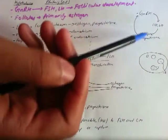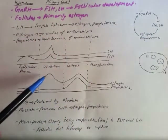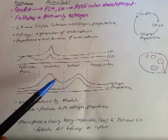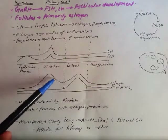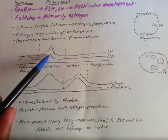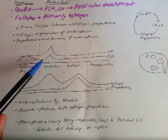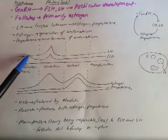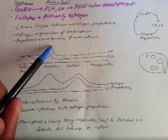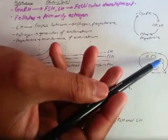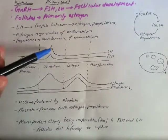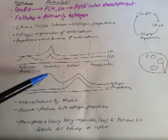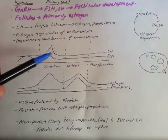We learned that estrogen causes negative feedback, but right at ovulation something different happens: the negative feedback is actually replaced by positive feedback. This large amount of estrogen causes a spike in LH and FSH — the opposite of what we'd expect. This spike in LH specifically causes the egg to be released from the follicle. So at ovulation, the spike in LH and FSH is caused by a spike in estrogen, and that causes the release of the egg.